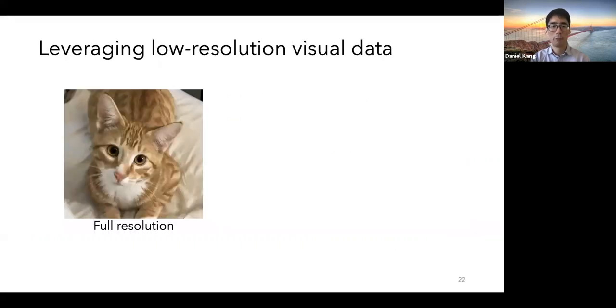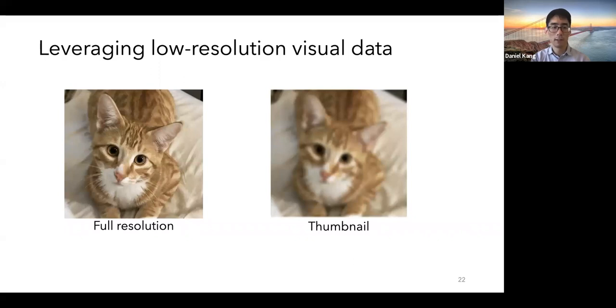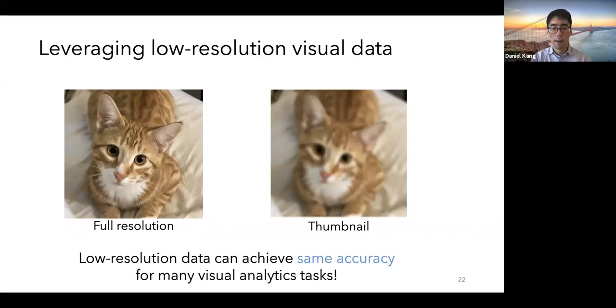Additionally, we can leverage low-resolution visual data. What I'm showing here on the left is a full resolution image of a cat and on the right, a thumbnail of it resized to the same resolution. As we can see, while the thumbnail does lose some visual acuity, it's fairly easy to tell that it's still a cat. And so low-resolution visual data can achieve the same accuracy for many visual analytics tasks. I will note here that this does not apply for all tasks, for example, if you want to find small objects in images, but this works for a large range of visual analytics tasks in particular.